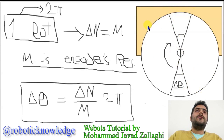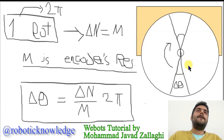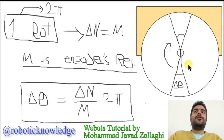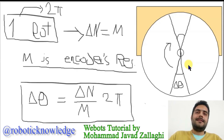I want to find a link between the rotation of the wheel and the feedback of the encoder. We know that every encoder has a resolution. The resolution is the number of steps, the number of ticks over one rotation of the actual encoder.